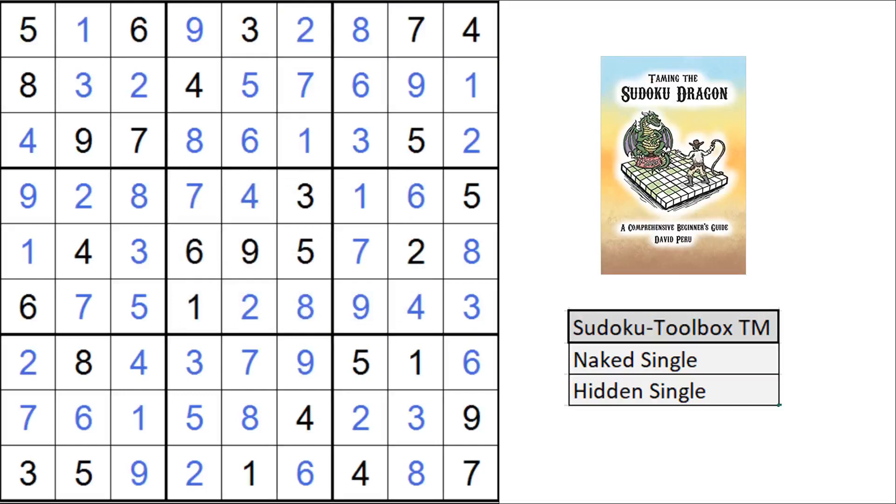So, using the toolbox. Naked singles, hidden singles, we got through that. How did you do? Did you understand how the toolbox worked? I plan to show more puzzles from the book, do medium and hard, and compare it and try to solve it just using the toolbox. And I might show some other techniques that vary with it.